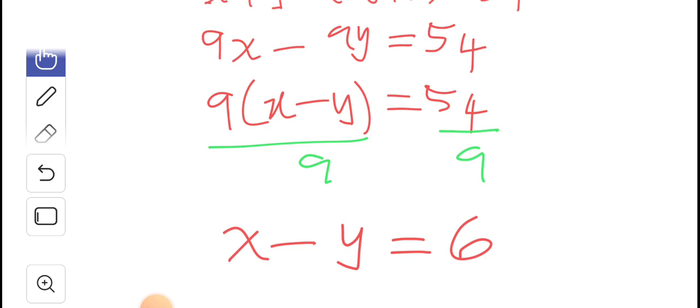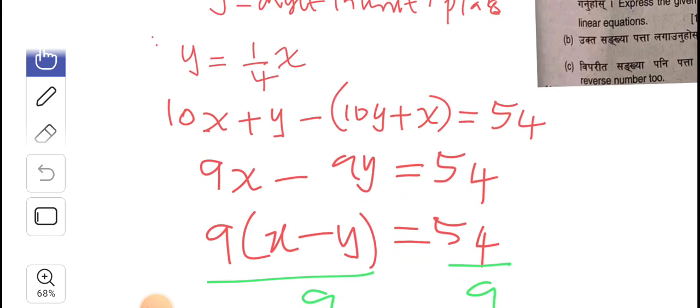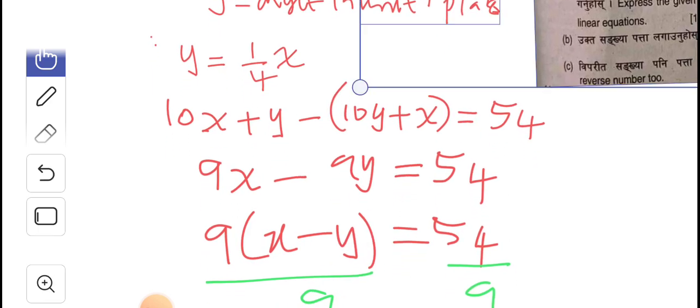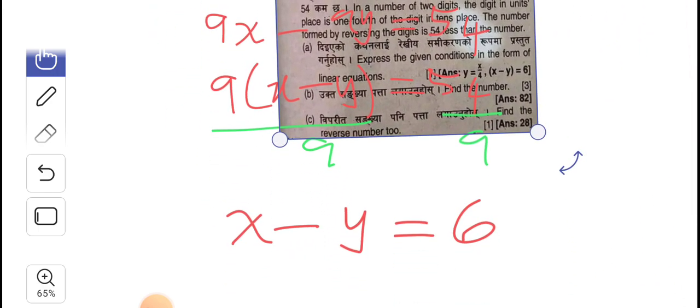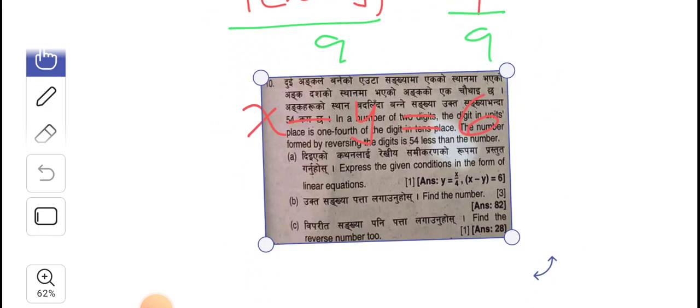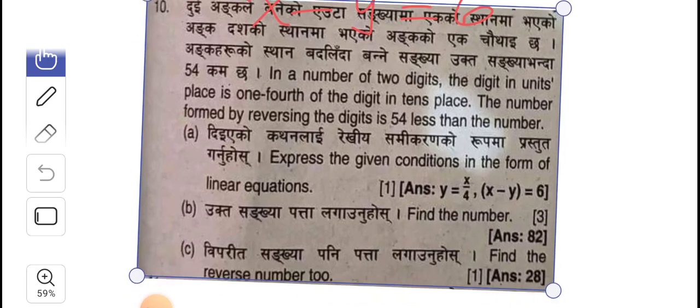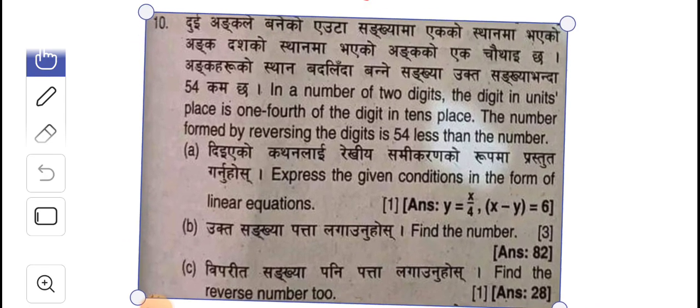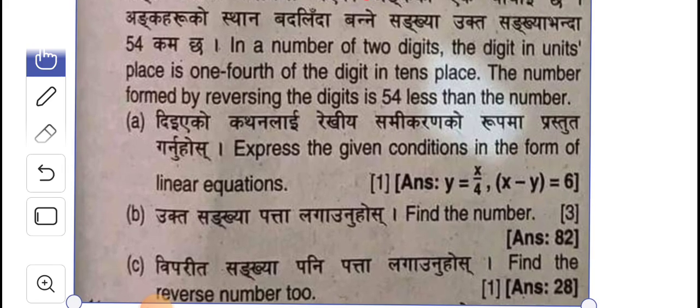And then we continue to answer the question. Continue to answer the question. And as we answer the question, we answer it as follows. In the second part, b, they're saying find the number. We want to find the number, so we answer 10b right now.